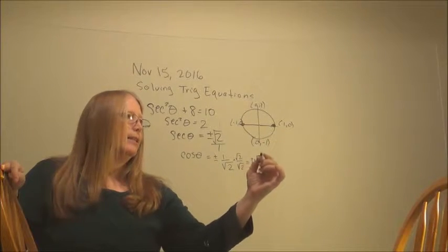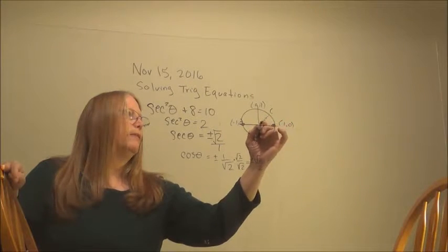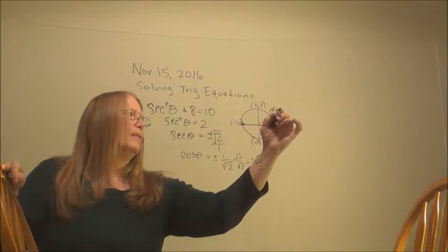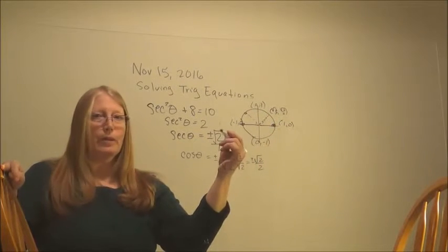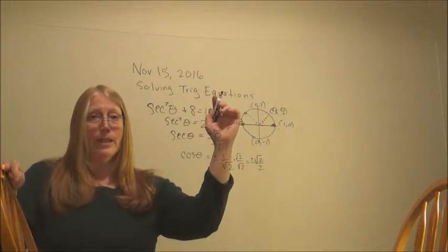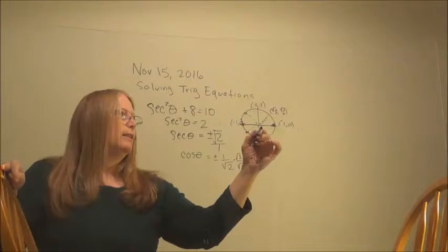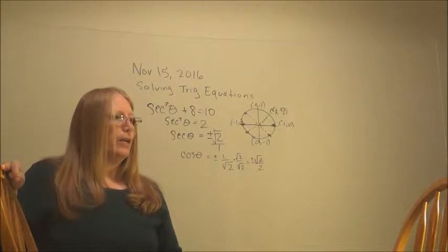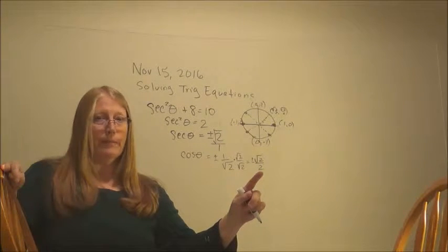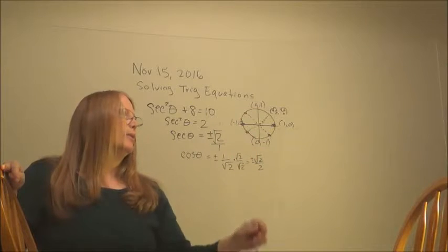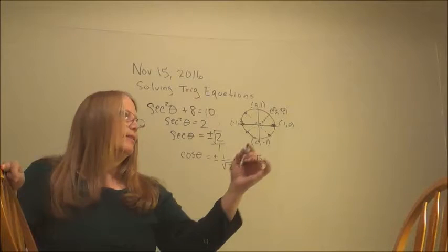Again, it's plus or minus. I can find that here, right in the middle of that quadrant. Square root of 2 over 2, comma square root of 2 over 2. And over here, it's going to be negative square root of 2 over 2 and positive square root of 2 over 2. So all four of those are going to be in the answer because they all have a first coordinate of square root of 2 over 2 or negative square root of 2 over 2. So where are they?